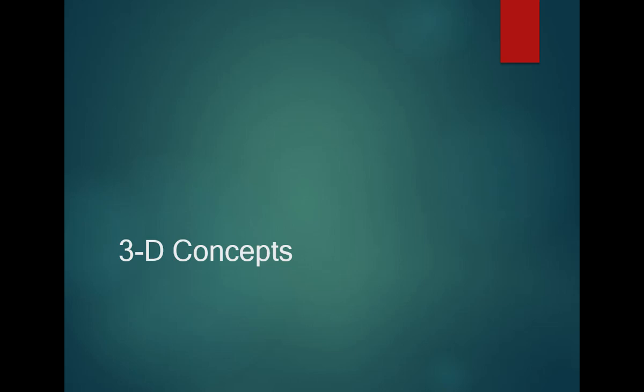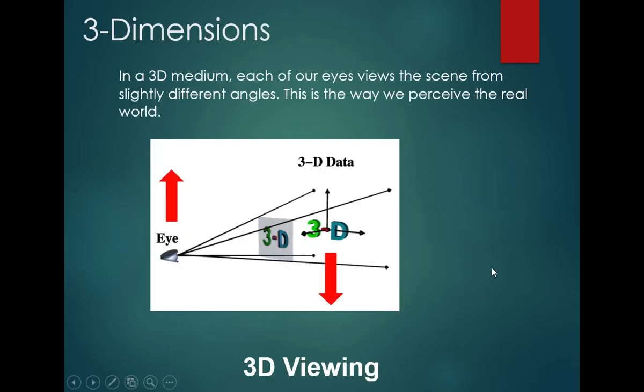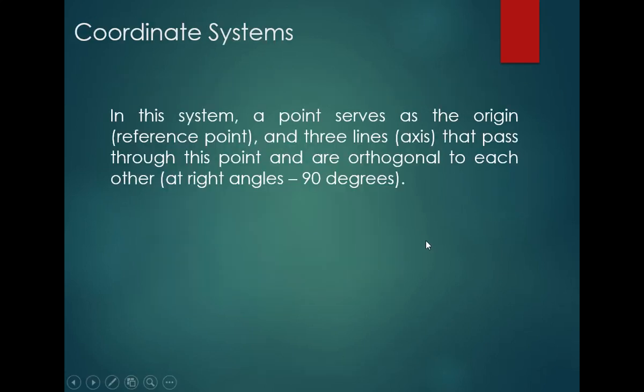In 3D Concepts, first of all, if we look at 3D Viewing — each of our views are seen from slightly different angles, so we can view a scene from different angles. We can perceive the world using a Coordinate System. There is a point we consider as the origin, which is the reference point. There are three axes: in 2D Transformations, X and Y-axis; and in 3D Transformations, X, Y and Z-axis — that pass through this point. The origin is the reference point and they are orthogonal, like 90 degrees from each other.